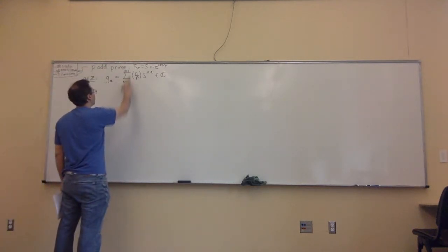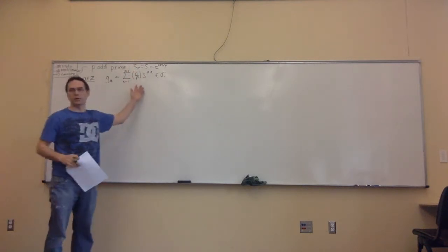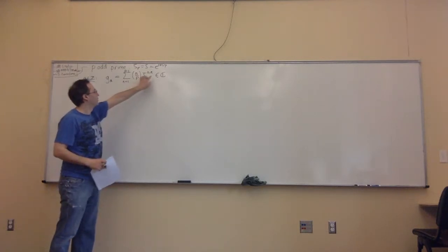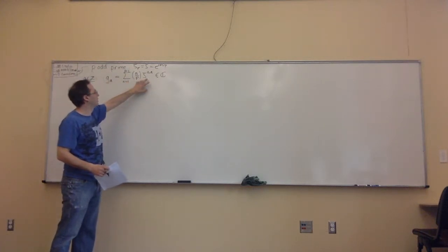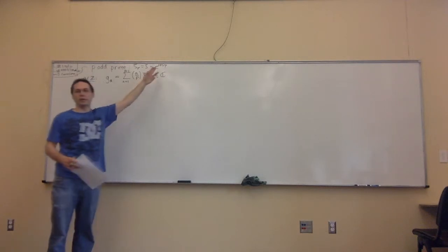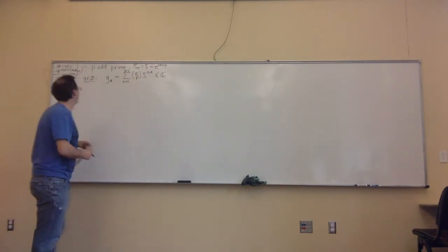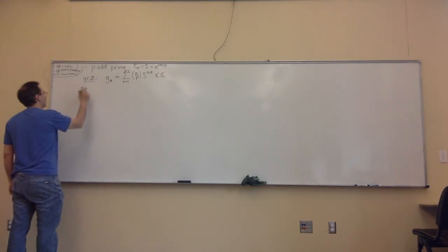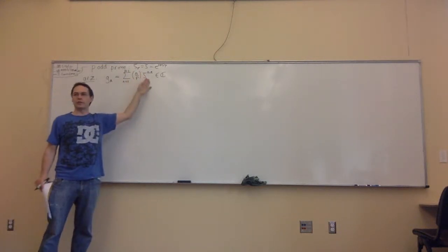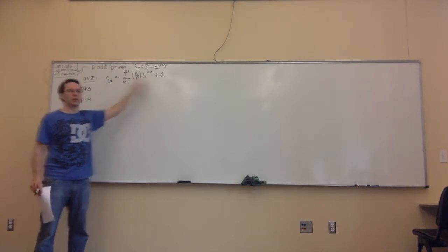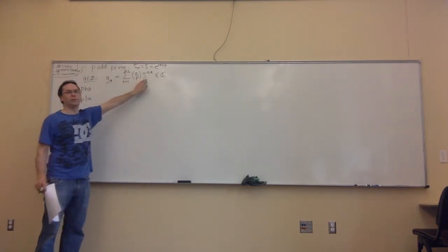So here's the Gauss sum: it's the sum as N goes from 1 to P minus 1 of the Legendre symbol N on P, times zeta to the power of AN. So you're running through all the possible Legendre symbols. Basically, the only difference between these different Gauss sums is that you're making a different choice of Pth root of unity. For P not dividing A, the only difference is the choice of Pth root of unity. For P dividing A, these are all 1.